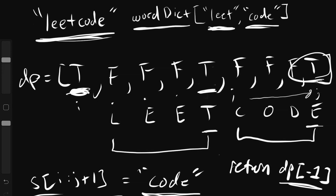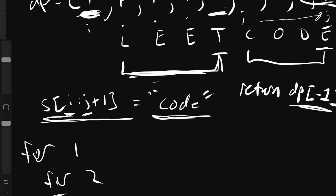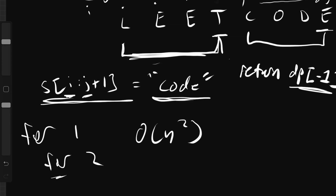Before jumping into the code, let's discuss the runtime. Since we're using two nested for loops — an outer loop for I and an inner loop for J — we're doing O(n²) work. O(n²) isn't the best runtime, but it's way better than O(n^n) and for this particular problem that's about as good as it gets. Our space complexity will be O(n), because we construct an auxiliary DP array of length proportional to the input.